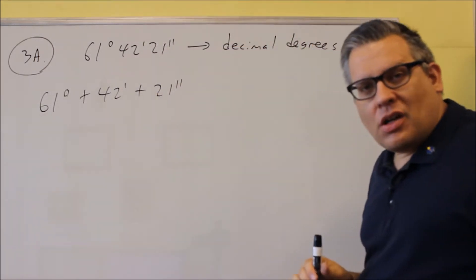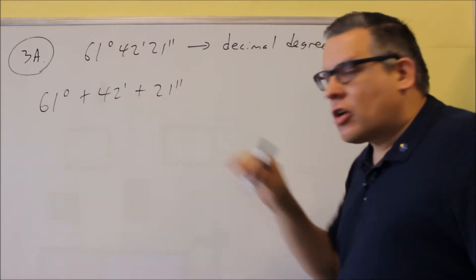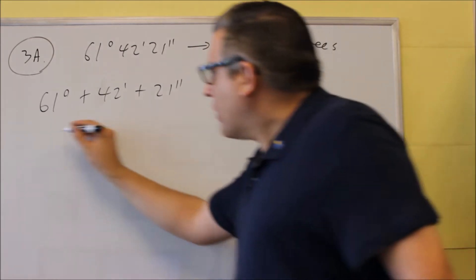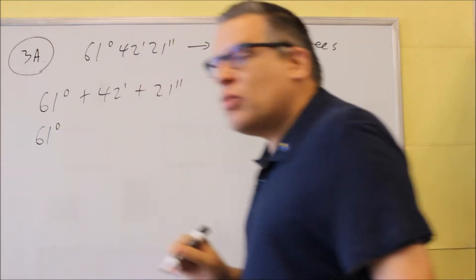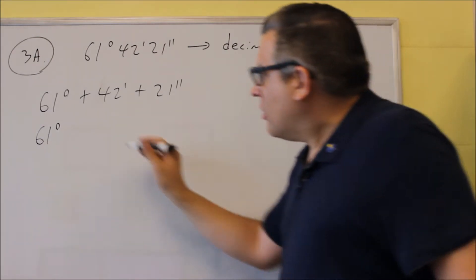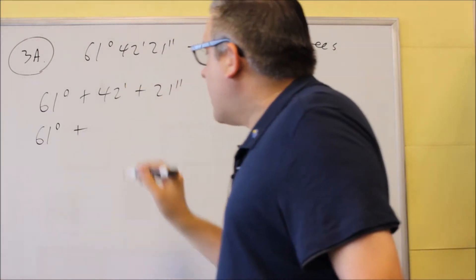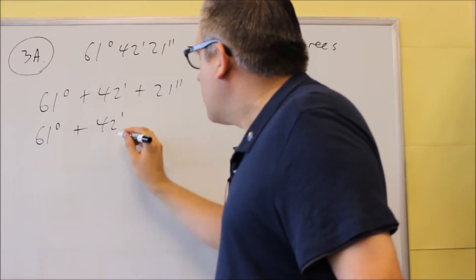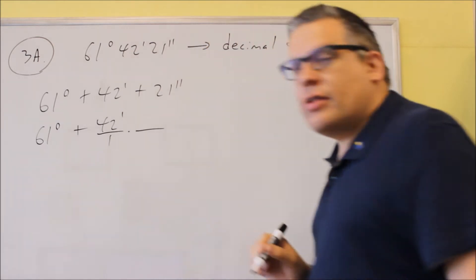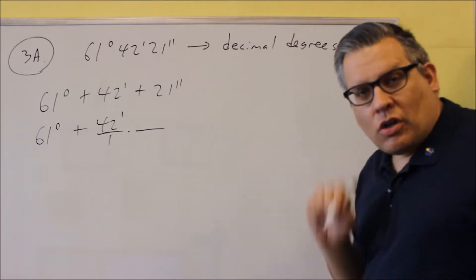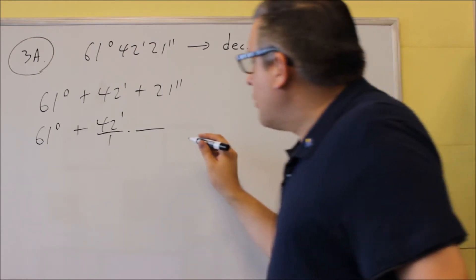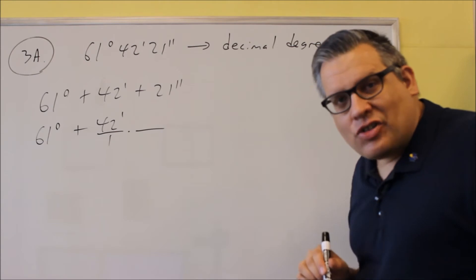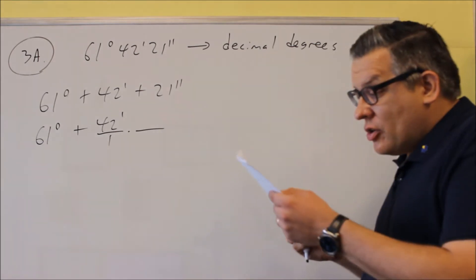So we want to separate it. Each of these we have to convert over into degrees, so we have to know what the conversion factor is. We don't have to do anything with the 61 degrees — it's already in decimal degrees. What we're going to do next is change out the minutes and the seconds. For the minutes, we have 42 minutes, and we want to multiply it by the conversion. The conversion is that 1 degree is equal to 60 minutes.